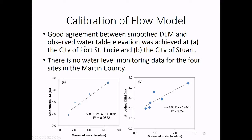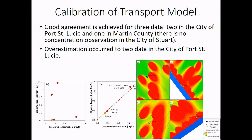After setting up the model, we conducted model calibration. First, we calibrated the flow model to determine the smoothing factor. The calibration looks pretty good for the City of Port St. Lucie and for the City of Stuart. There was no data for Martin County. This is a measured vs. simulated water level plot — this is the 1:1 line — and the results look good. We believe the flow model is well calibrated.